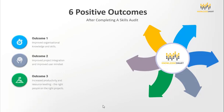Outcome three: increased productivity and resource leveling — the right people on the right projects. Instead of overloading our star users, we're able to bring them into the right projects at the right time. We're also able to stay proactive in terms of upskilling so that parts of our workforce do not get overloaded.